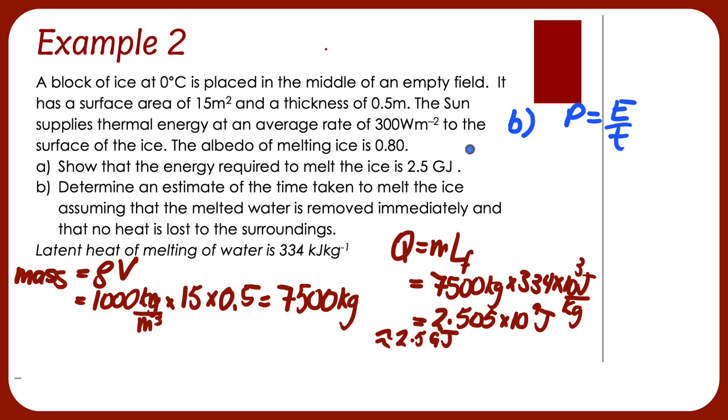If we think about the power we need, not all of this is coming to my ice. I'm only going to get 1 minus 0.8, because that's how much gets scattered, times 300, and times the area. Because remember, this is watts per meter squared. So if I want just the amount of watts, my power, I'm going to have to multiply that by 15.